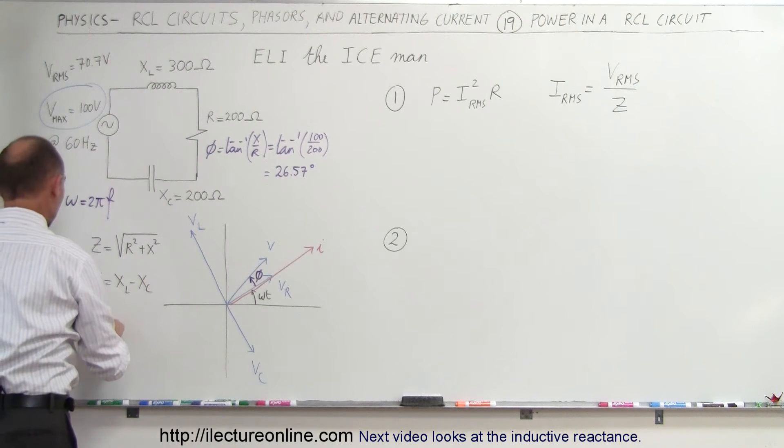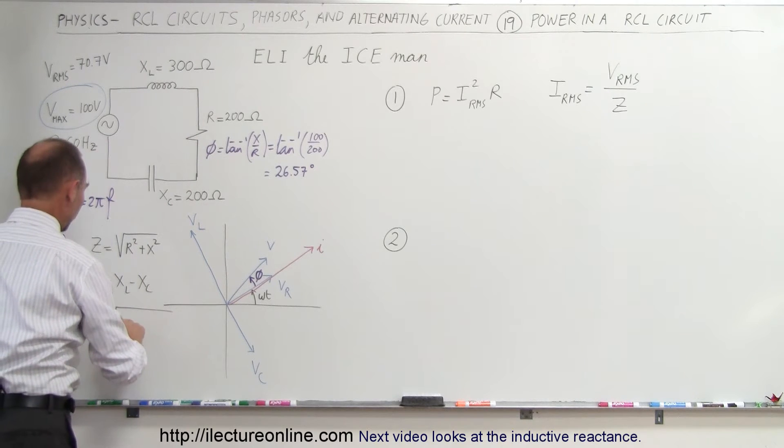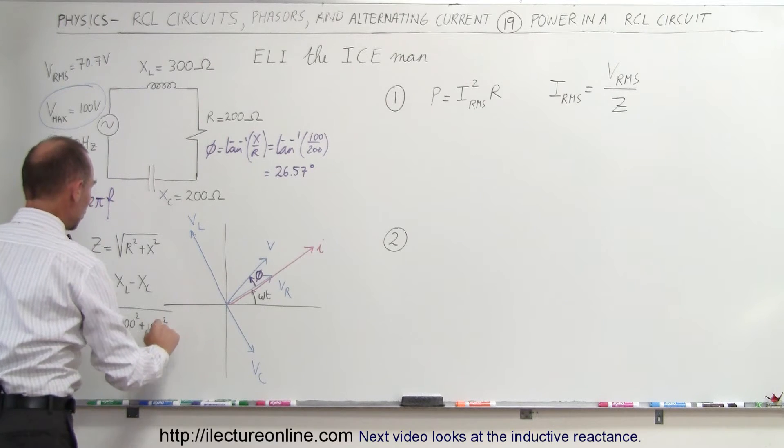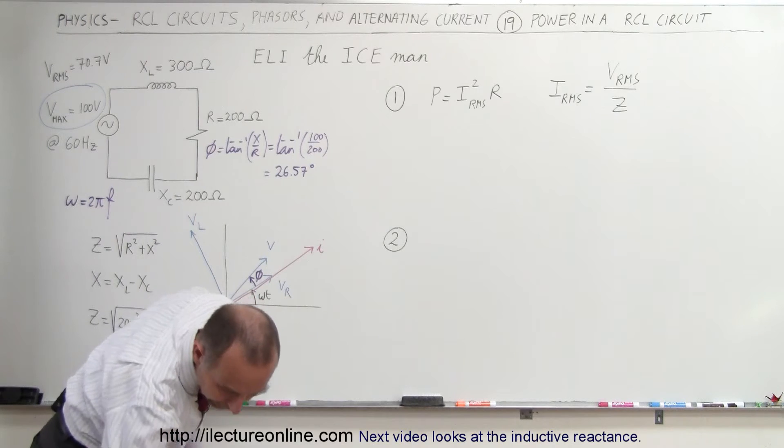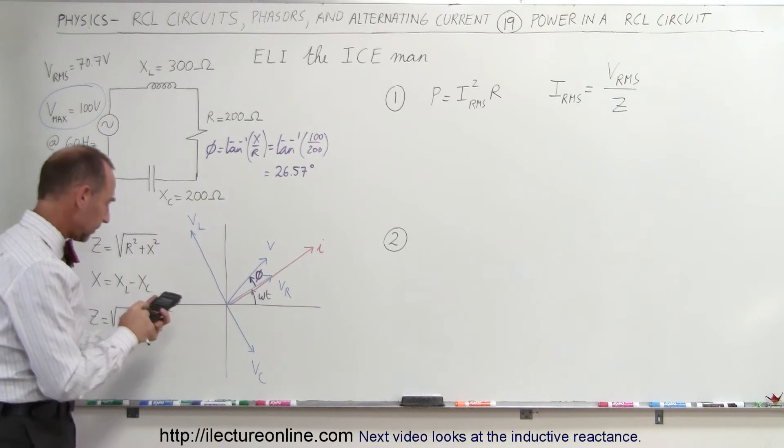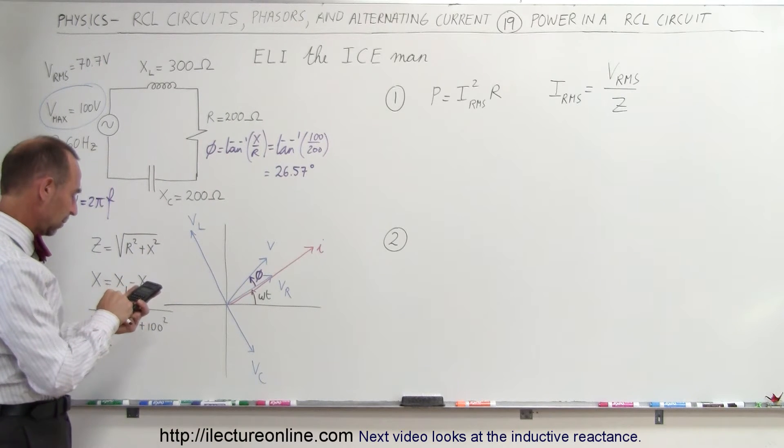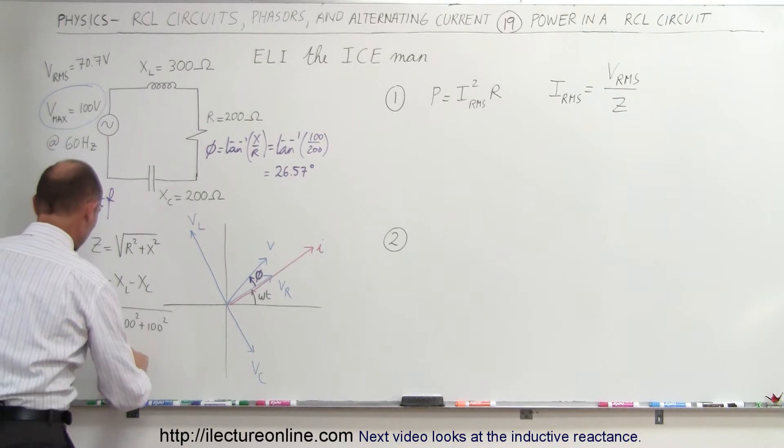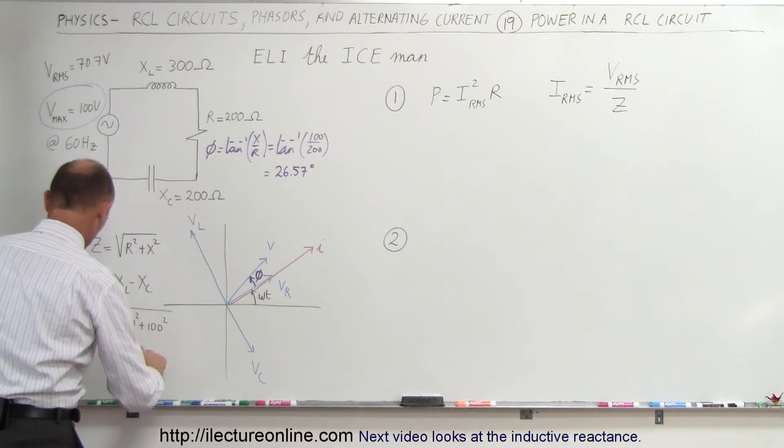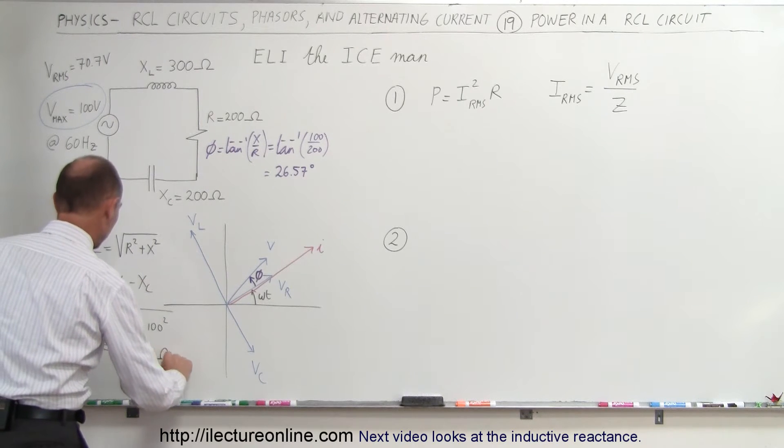So in this case, Z is equal to the square root of 200 squared plus 100 squared. Notice the units are ohms. So 200 squared plus 100 squared, take the square root, that would be 223.6 ohms.